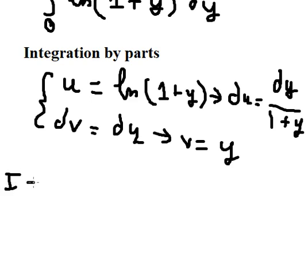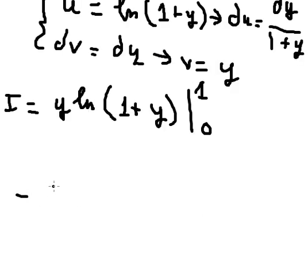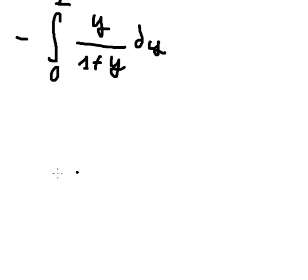And now we get the final answer, so we have u multiplied by v. We put number 1 here, number 0 here, minus the integration from 0 to 1 of y times y over 1 plus y dy. So if we put number 1 here, you get ln 2.